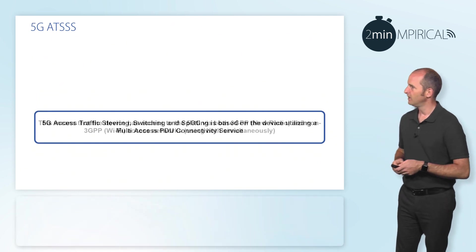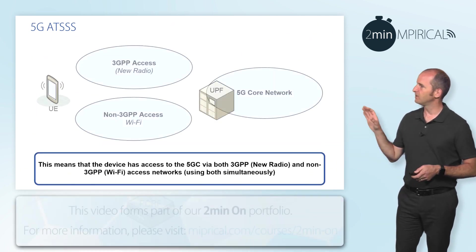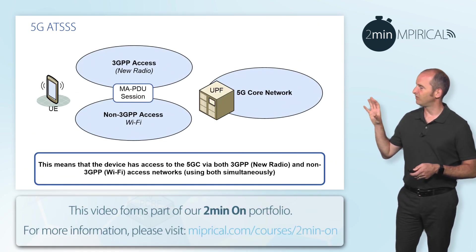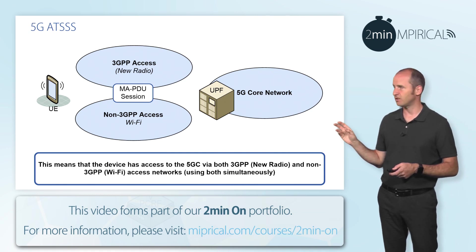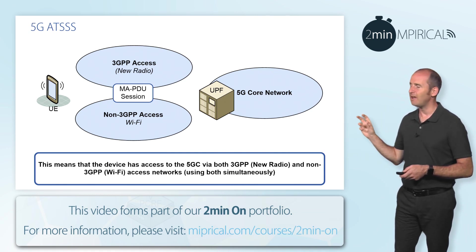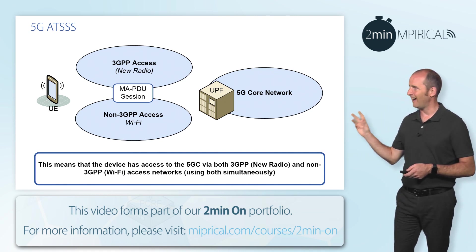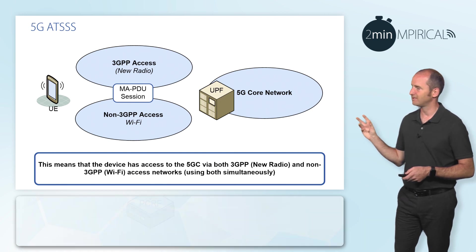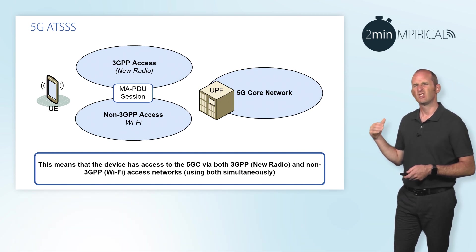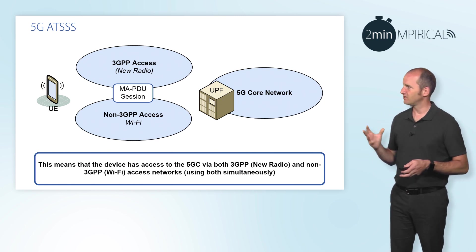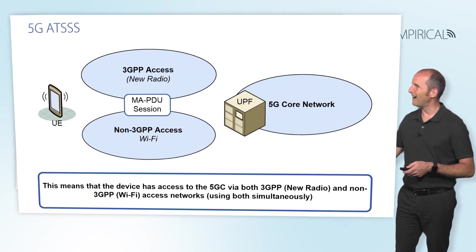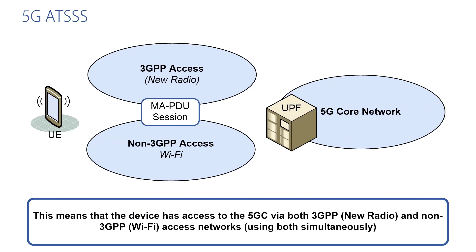So what does this actually mean? Well, here you can see that the device has simultaneous access to both a 3GPP access network and a non-3GPP access network. So we're really talking about new radio and Wi-Fi respectively here. The device can use either access network, potentially simultaneously.